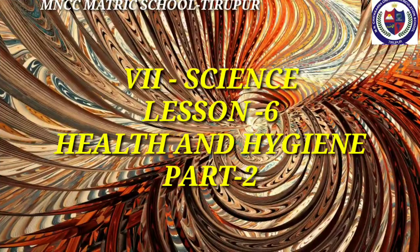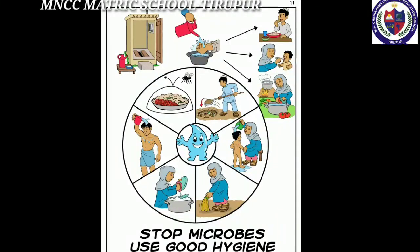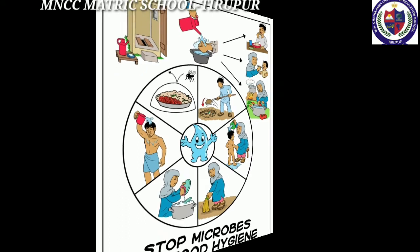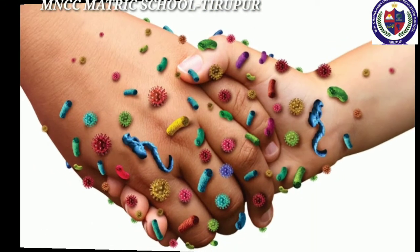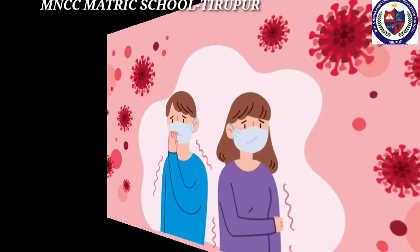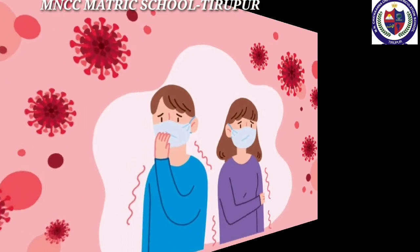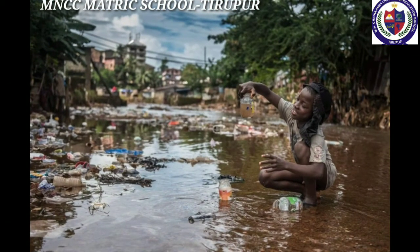Hi students, we already discussed health and hygiene in part one. In this video we are going to learn communicable and non-communicable diseases. Communicable diseases are those that spread from one person to another. Healthy persons must be protected from people with communicable diseases. Diseases spread through contaminated air, water, food, or vectors.